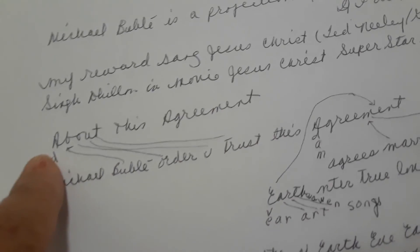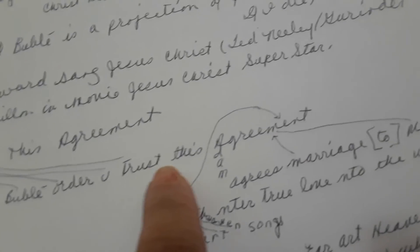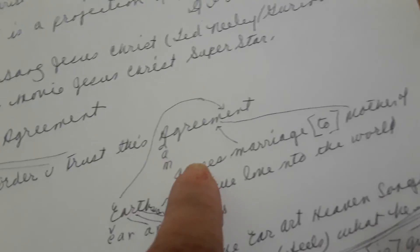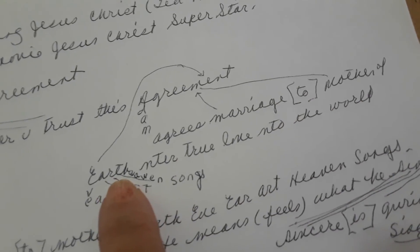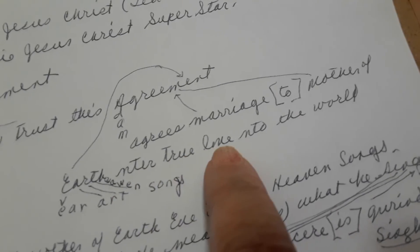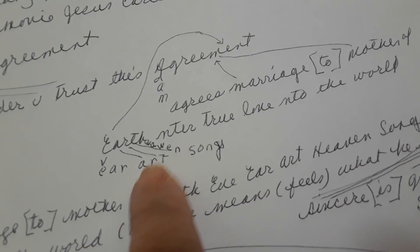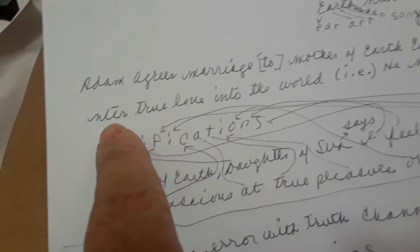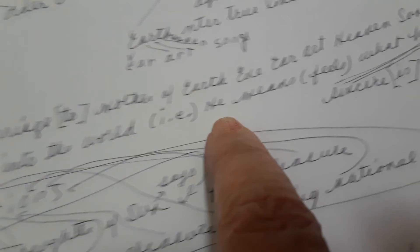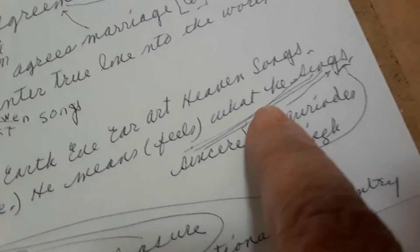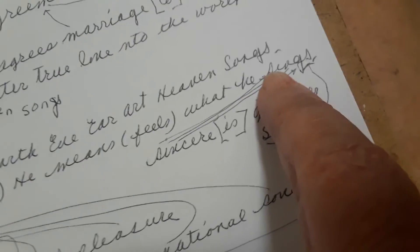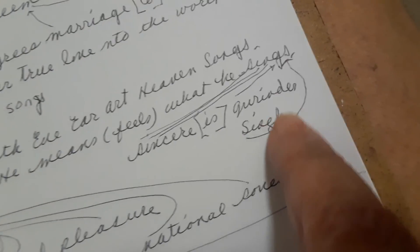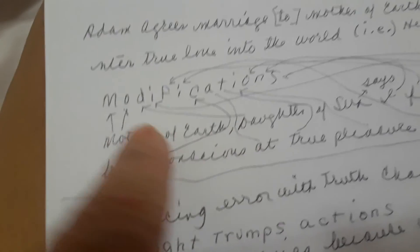About this agreement. Adam, Michael Buble, order you trust this agreement. Adam agrees marriage to mother of the earth. Eve can't hear art, heaven's songs. Enter true love into the world, i.e., he means feels what he sings. Sings, as I am for sincere, is Gurinder Singh. Modifications. Mother of the earth, daughter of the sun says I feel pleasure being conscious at true pleasure, ordering national sovereignty.